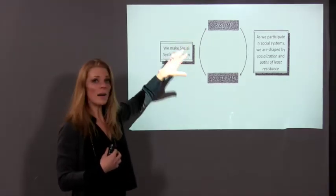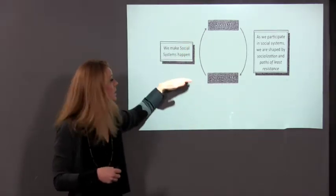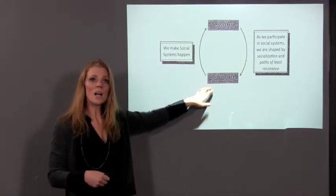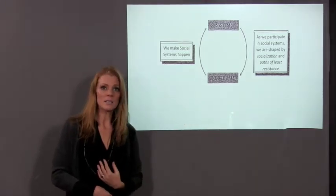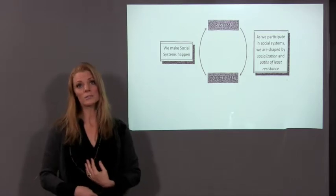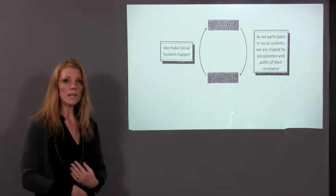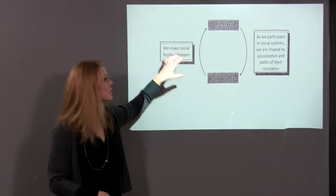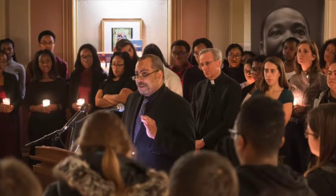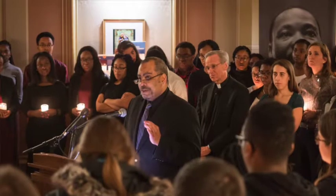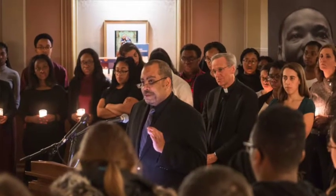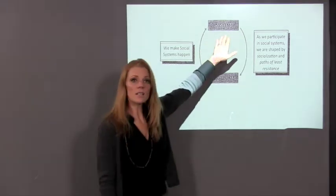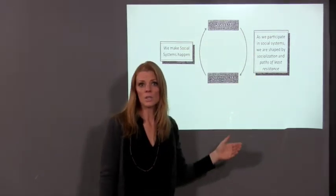This is where we have the power, because it's ultimately individuals that make the social systems happen. If we can recognize in ourselves where we have these implicit biases — because we all have them, it's just a matter of recognizing them — we can come together as individuals to stand up for the change in a social system that needs to happen. If enough of us are ready to do that work and have those hard conversations, we then can shift the direction of the social system.